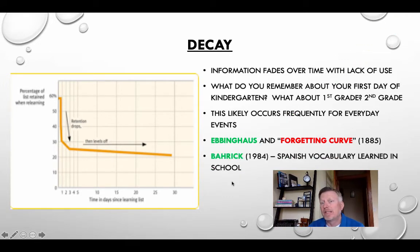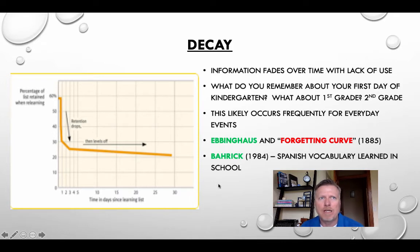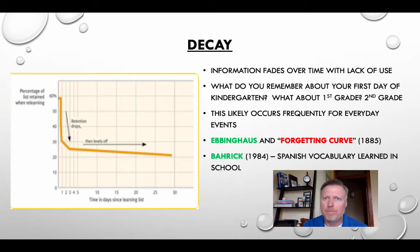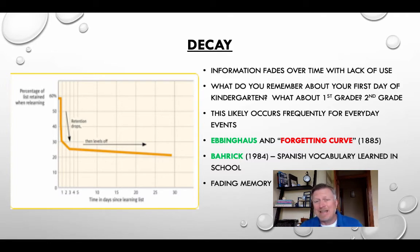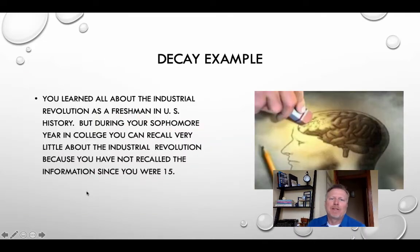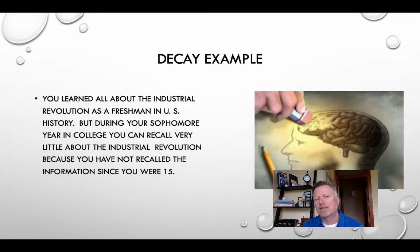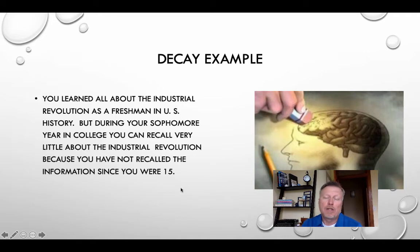This was replicated almost a hundred years later by Baddeley, using students who studied Spanish vocabulary they had learned in school. It's kind of like taking a foreign language class — at the end of the year in May, when you have a test, you're pretty good at it. Then June, July, and August you don't do any of that vocabulary work, and you come back in August or September remembering a lot less. A decay example: you probably learned about the Industrial Revolution as a freshman in U.S. history, but during your sophomore year in college when you take a U.S. history class, you recall very little because you haven't visited that information since you were about 15. It could just be that that information is gone.